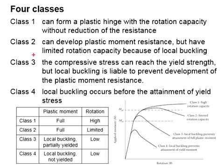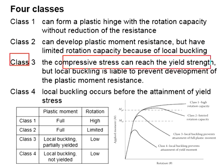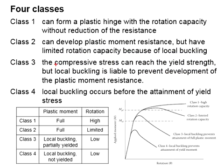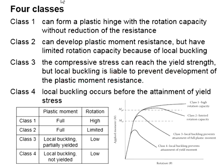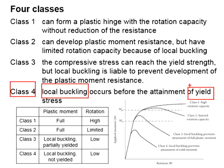For class three, the compressive stress can reach the yield strength but local buckling will prevent the development of plastic moment resistance. For class four, local buckling occurs before the attainment of the yield stress.